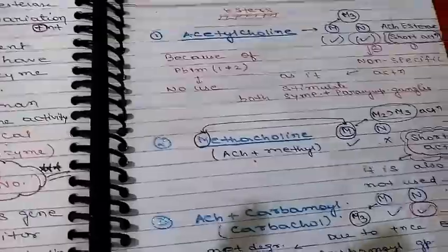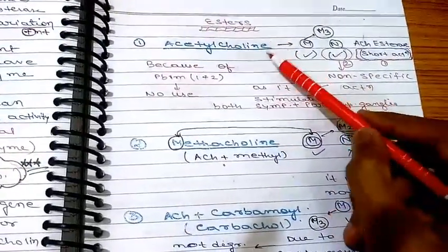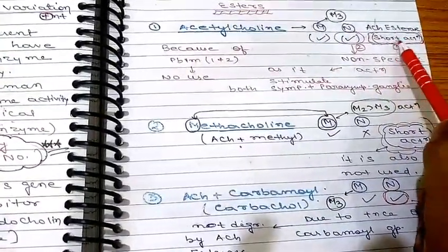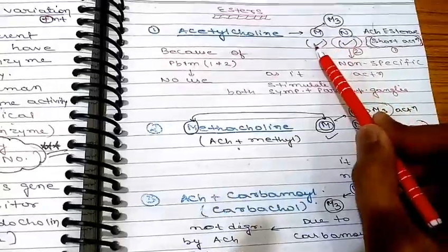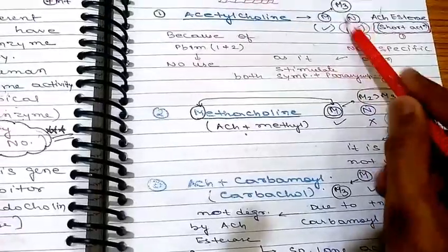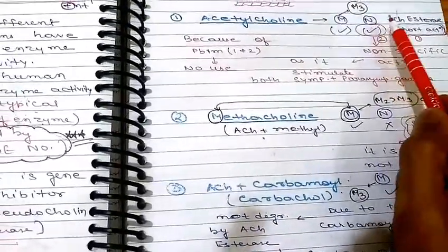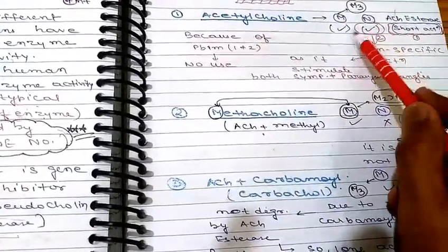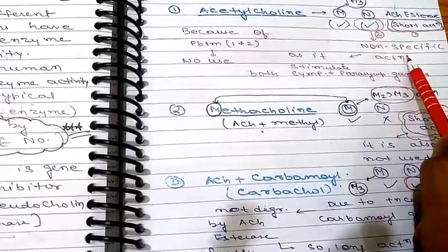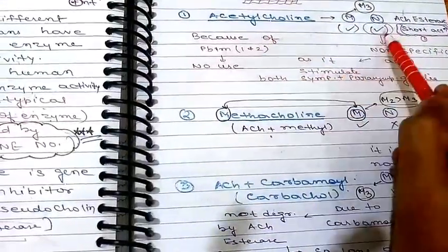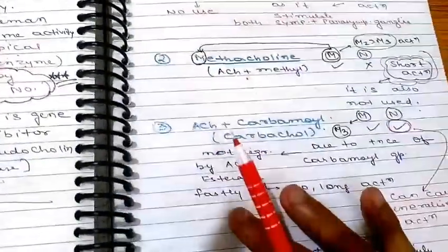Starting with the esters, the first is acetylcholine. Acetylcholine acts on both muscarinic and nicotinic receptors and is quickly degraded by acetylcholinesterase, so it has a short action. It acts on muscarinic mainly on M3. Because of its action on nicotinic receptors — which are also present on sympathetic ganglia — it has non-specific action. Due to this non-specific and short action, it is of no use as a drug.